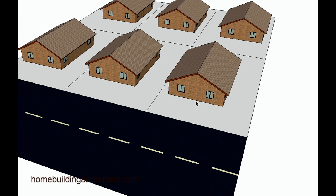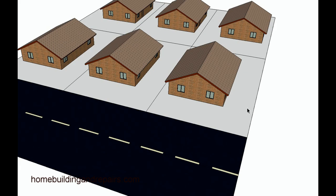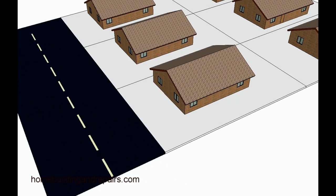An easement is a space that most planning departments require from the front of your home to the center of the street, or sometimes from the front of the home to another spot. You're going to have a minimum easement requirement. If you're going to be building a room addition on the front of your home and the minimum easement is 30 feet and you're at 32 feet, then you would only be able to add two feet onto the front of your house.